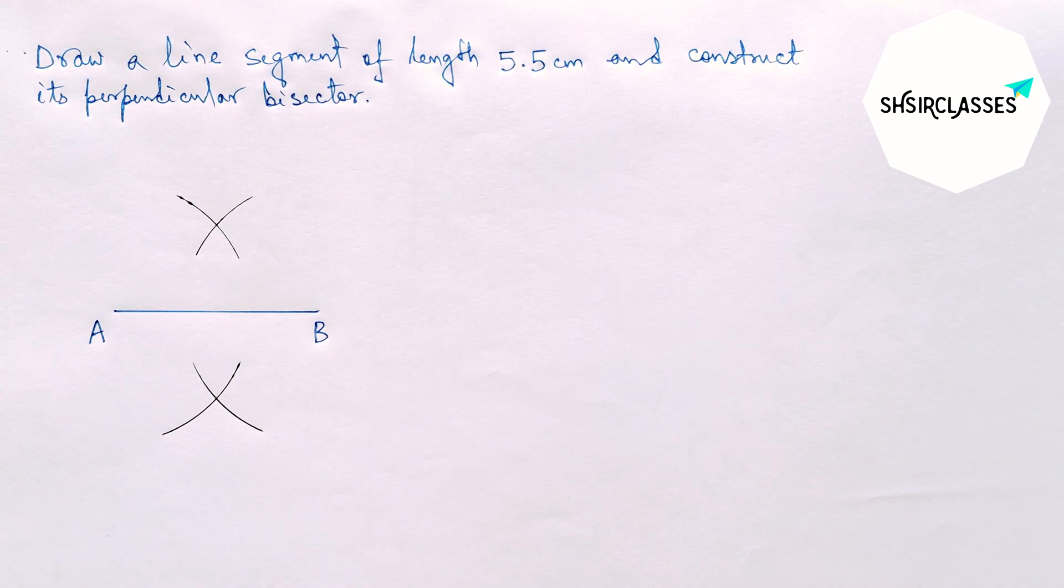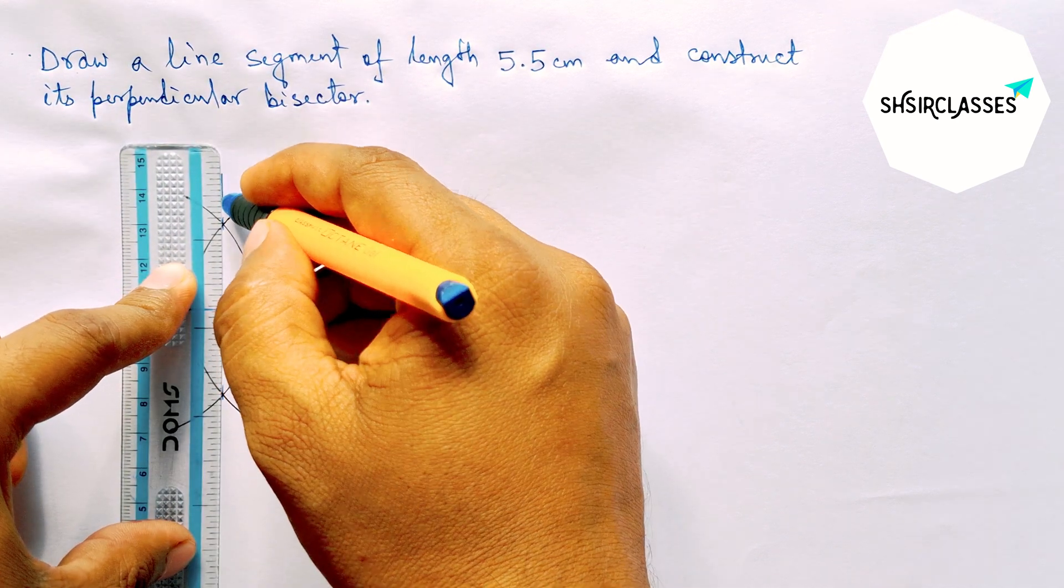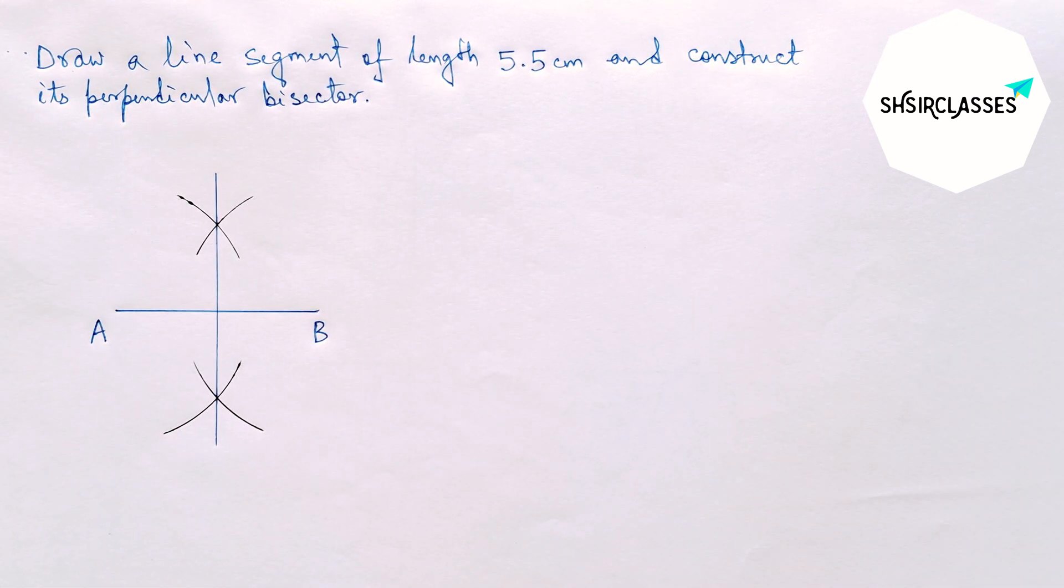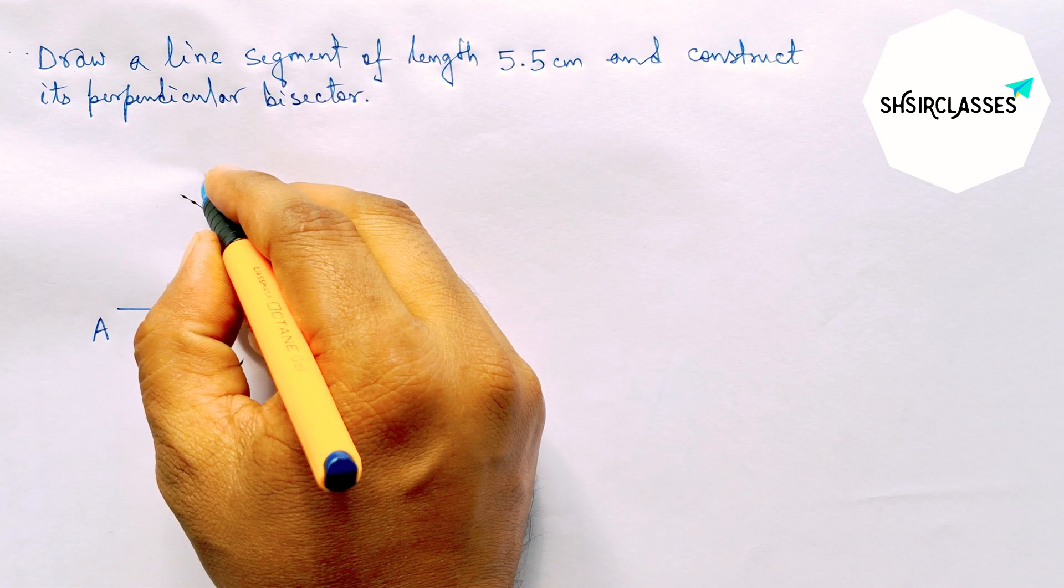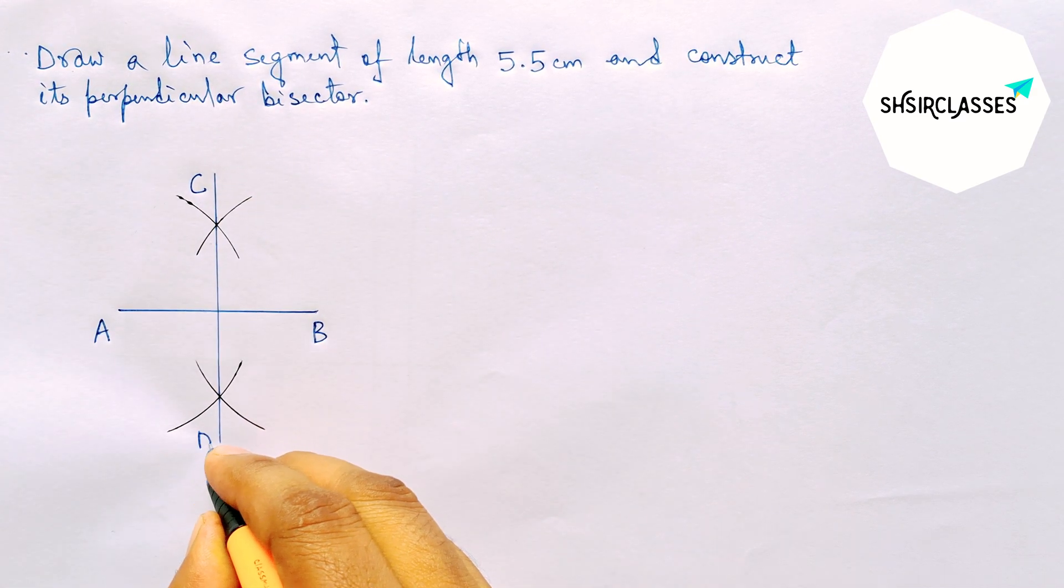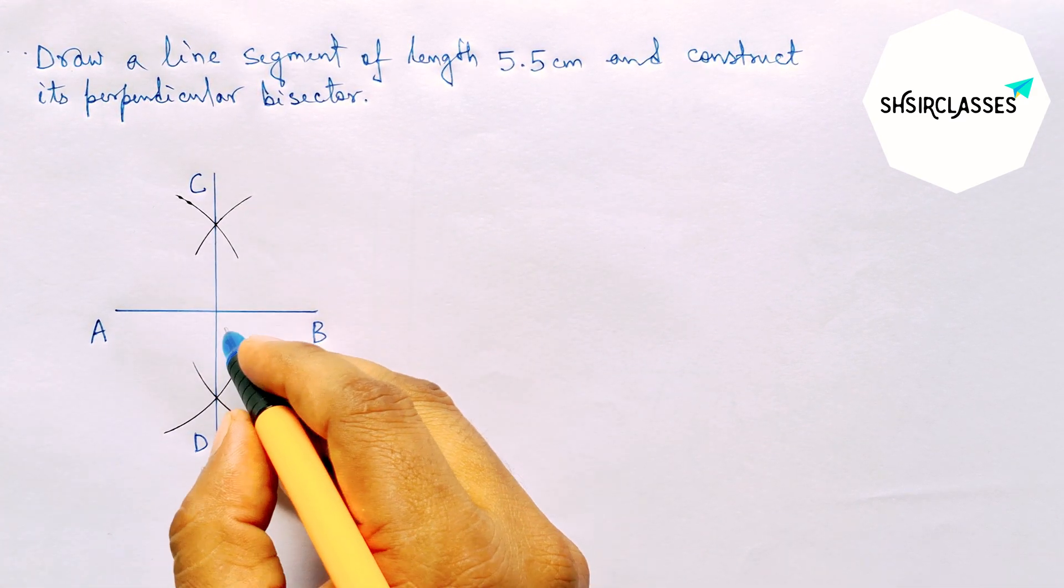Okay, next joining this and this is the required perpendicular line. So labeling here C and here D. Both the lines intersect here at a point P.